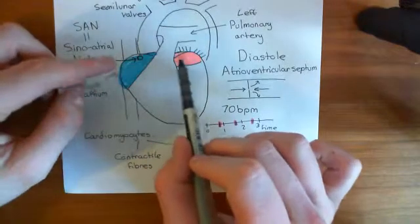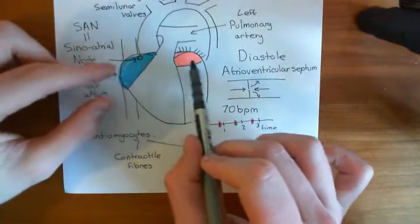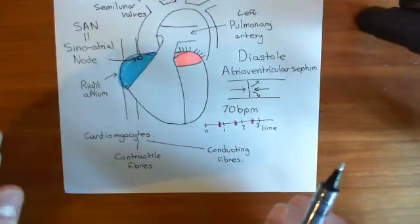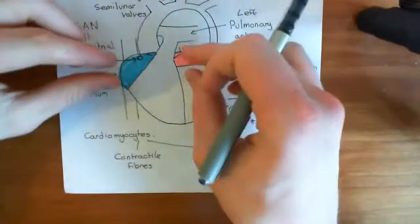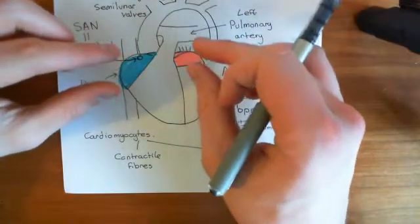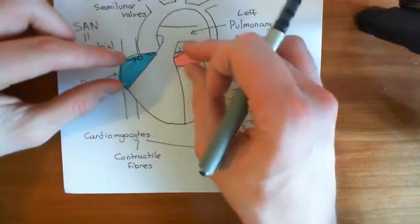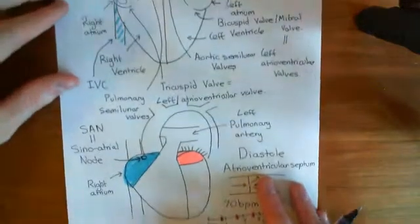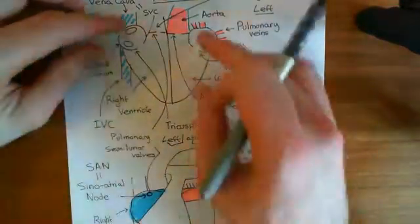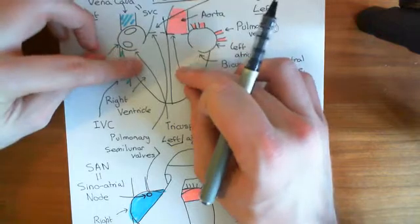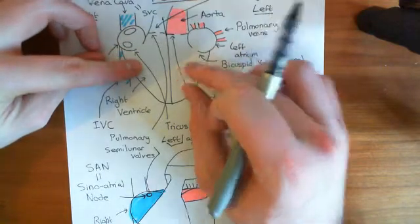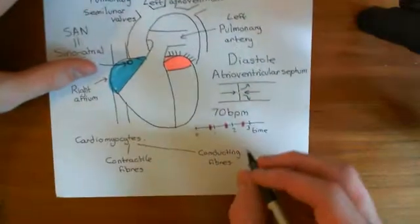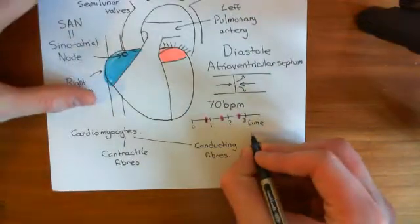When these action potentials spread down the atria, they cause the atria to contract. Both the right and left atria are going to contract and squeeze the blood within them into the ventricles. So we've gone from being in diastole to being in what's known as atrial systole.